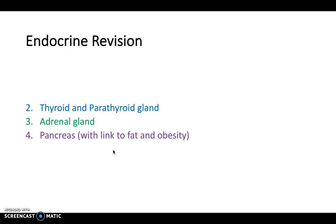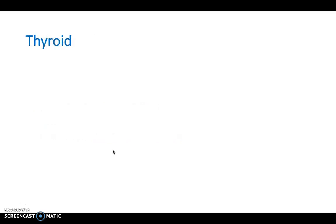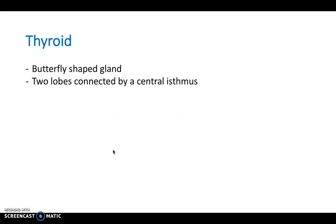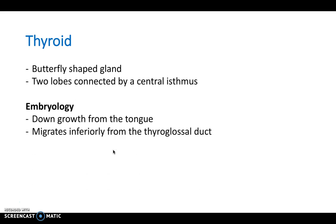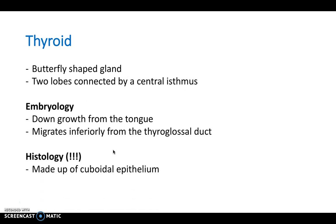Let's start with the thyroid, which is a butterfly-shaped gland. It's got two lobes on either side, separated by a central isthmus, which is the narrow passage between the two pieces of tissue. In terms of embryology, it's actually really important for the thyroid, because it's a downgrowth from the tongue — it migrates inferiorly from the thyroglossal duct, which is a posterior aspect of the tongue near the vallate papillae. Histologically, it's made up of cuboidal epithelium and calcitonin-producing C cells.